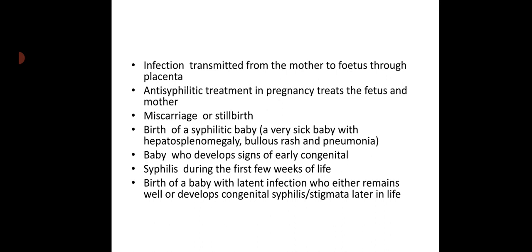Congenital syphilis: infection is transmitted from the mother to the fetus through the placenta. Antisyphilitic treatment in pregnancy treats both the fetus and mother. Congenital syphilis can present as miscarriage or stillbirth, birth of a very sick syphilitic baby with hepatosplenomegaly, bullous rash and pneumonia, or a baby who develops signs of early congenital syphilis during the first few weeks of life, or birth of a baby with latent infection who either remains well or develops congenital syphilis later in life.